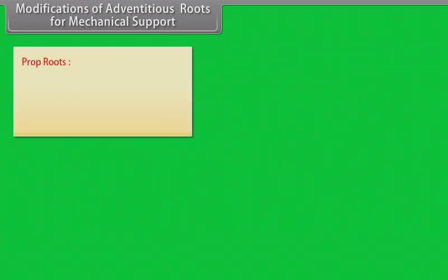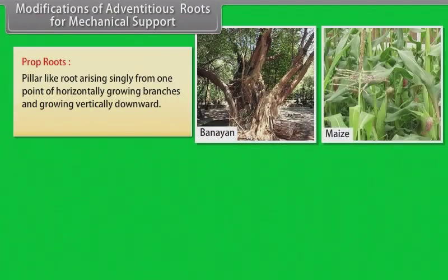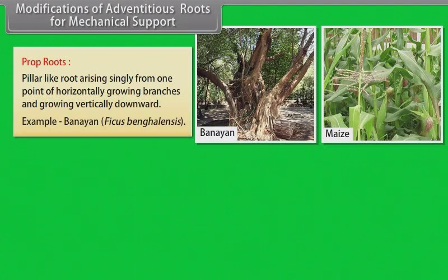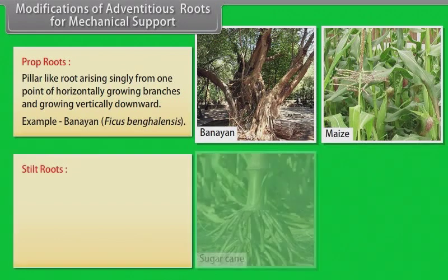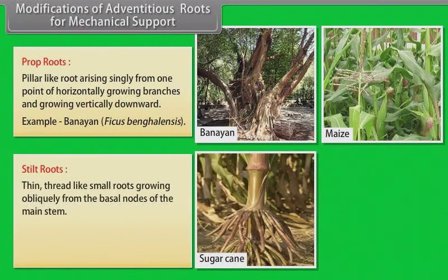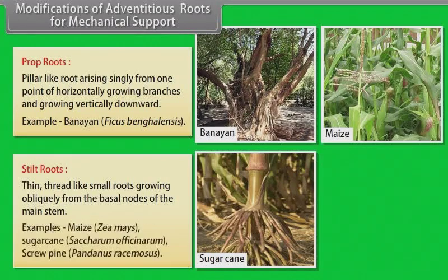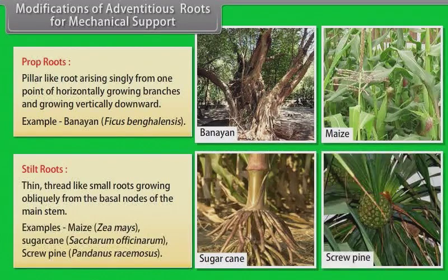Modifications of adventitious roots for mechanical support. Prop roots: pillar-like roots arising singly from one point of horizontally growing branches and growing vertically downward. Example: banyan. Stilt roots: thin, thread-like small roots growing obliquely from the basal nodes of the main stem. Examples: maize, sugarcane, screw pine.